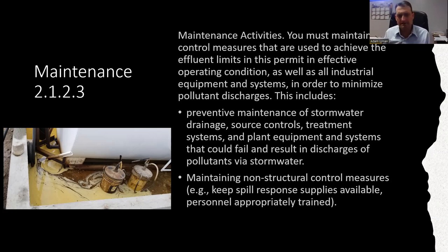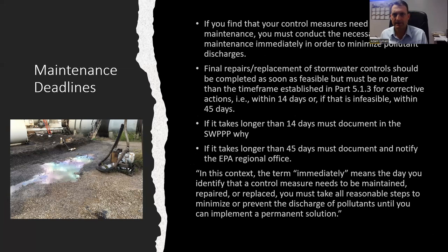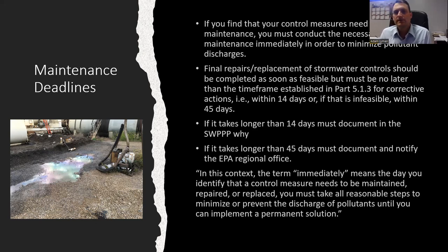Maintain storage areas like the containment shown on the left. Maintain non-structural controls, keeping spill kits full — EPA inspectors always open the spill kits during MSGP site inspections to check if there's actually material in them. If you find a control needs routine maintenance, you have to conduct it immediately to minimize pollutant discharges. Final repairs should be completed as soon as feasible, but no later than 14 days. If it's infeasible, document it and you have 45 days. If it takes longer than 45 days, you have to notify the EPA regional office — in Idaho, that's now the DEQ regional office.